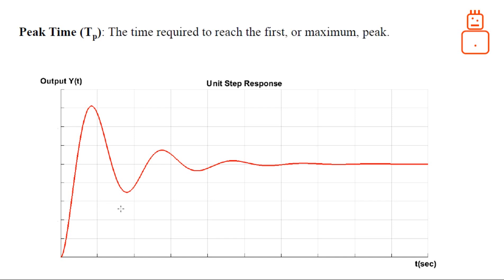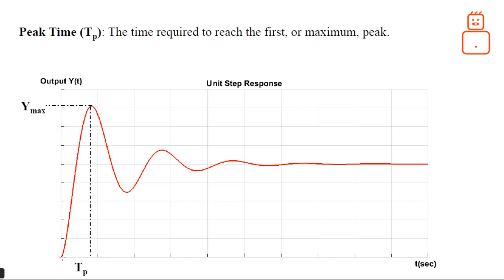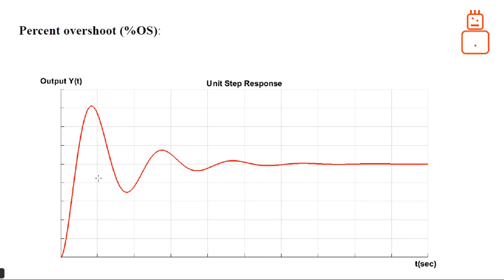The peak time is the time the system takes to reach its maximum value. It is the time required to reach the maximum peak. This is Y_max — the maximum peak in the system — and the time from zero to this point is called the peak time T_P.